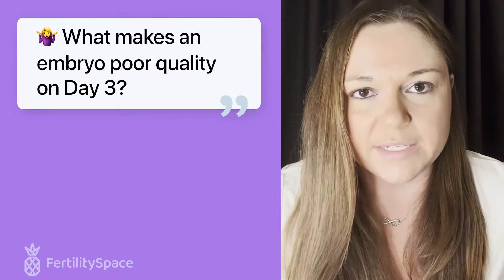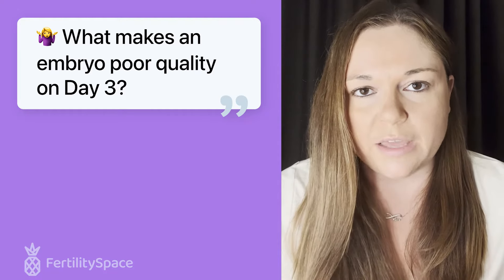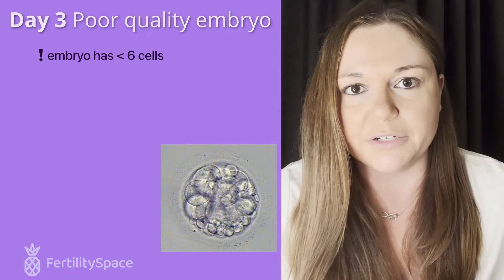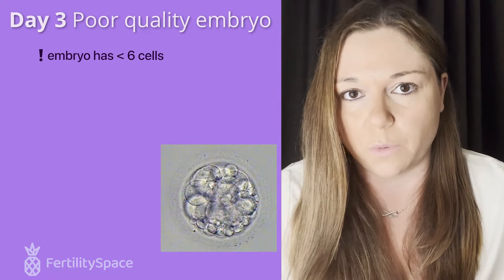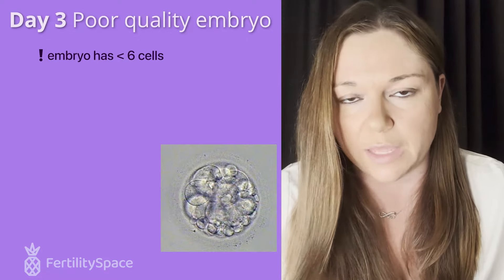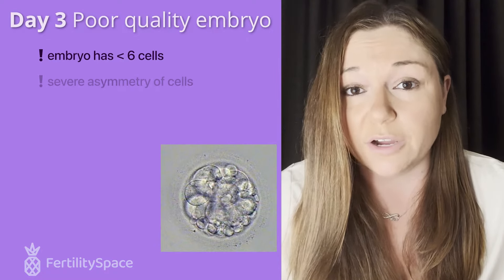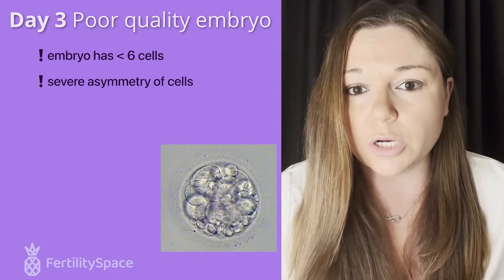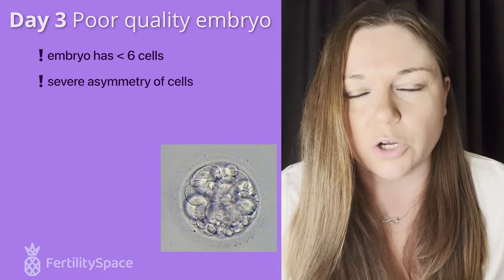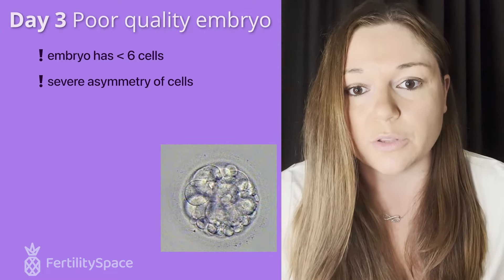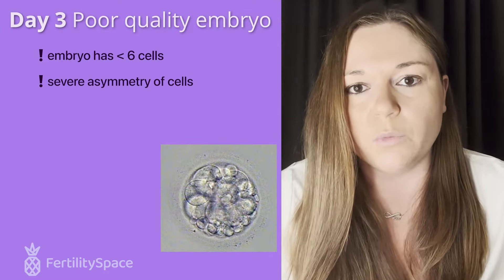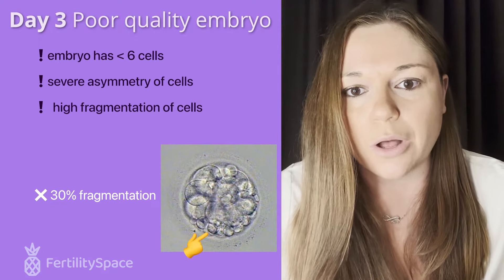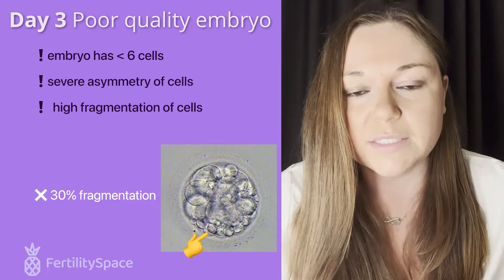What is a poor quality embryo on day three? If we're looking at an embryo on day three, we don't want to see an embryo with fewer than six cells — that means there's a severe delay in cell division, which typically indicates something wrong with the DNA inside the cells. We also wouldn't want to see severe asymmetry, where some cells look nice and round while others look much larger, suggesting cell division isn't occurring simultaneously. And we wouldn't want to see a lot of fragmentation, meaning cells are breaking into fragments instead of dividing properly.